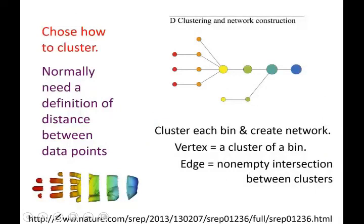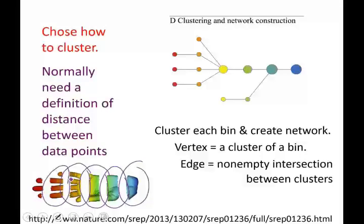Once we have our overlapping bins, we now need to cluster the data set, and there are different ways to do that. We could use K-means, we could use DBSCAN — there are lots of different clustering methods, so we have to choose one.